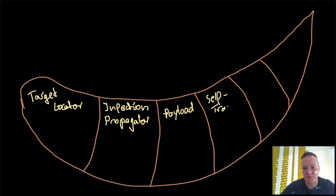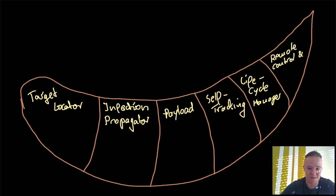The other components are optional. Those are payload, some kind of self-tracking mechanism, and a life cycle manager. And last but not least, there's often some kind of remote control and update interface that the attacker uses to add more infection vectors, for instance. These two components, especially when they use exploits, those need to be updated after some time.